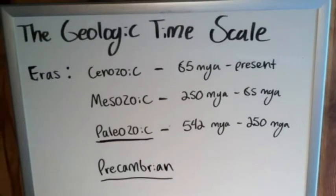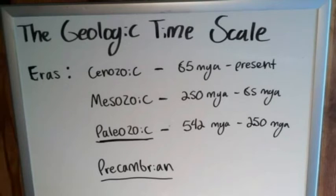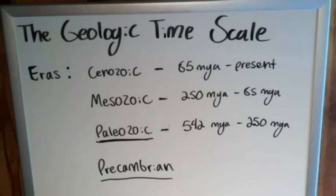The Pre-Cambrian can be broken down into eons, eras, epochs, and ages as well, but for the most part it's largely just when the Earth was a lifeless sphere floating out in the cold dark space.